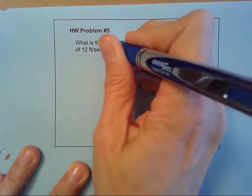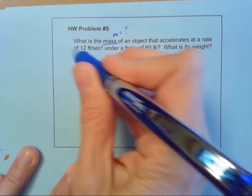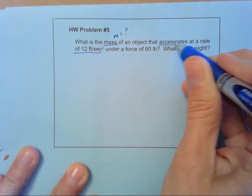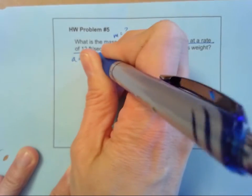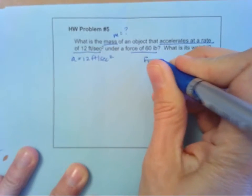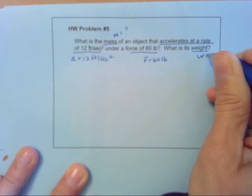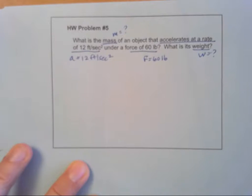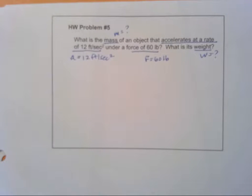So we don't know the mass. What is the mass? So we have to figure that out, but we do know the acceleration. Accelerates at a rate, so we're given this a = 12 feet per second squared, and we know that the force is 60 pounds. But we're also looking for the weight. And so a little bit different formulation this time, but we can still use the same principles we were using before to solve this problem.